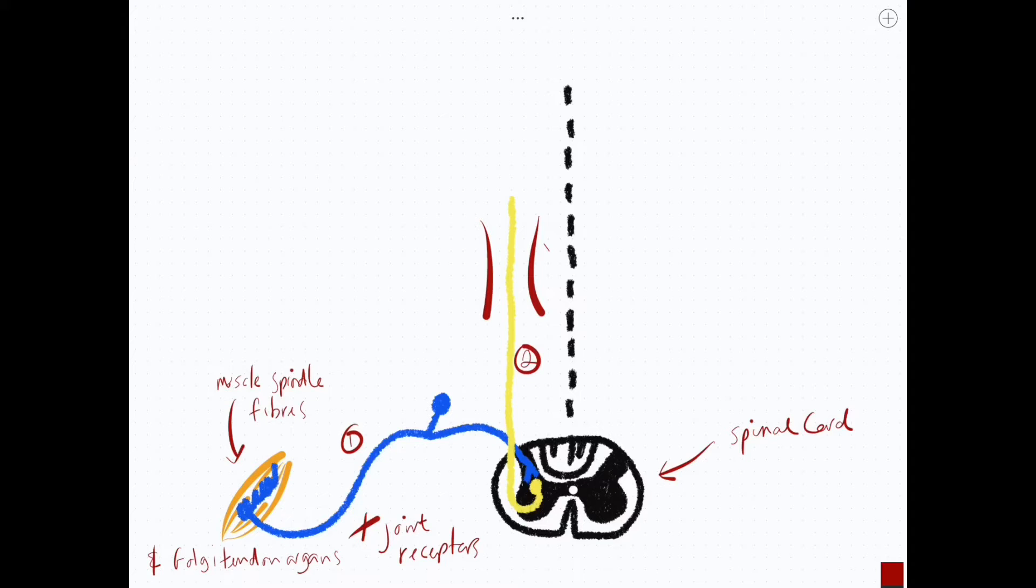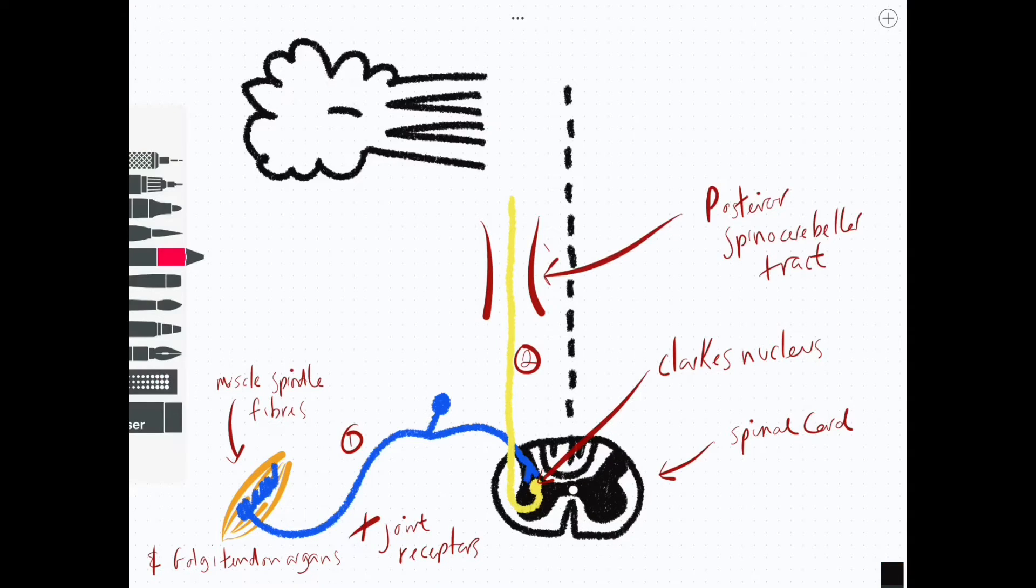That's going to take place at the Clarke's nucleus. Clarke's nucleus extends as a column throughout the spinal cord between the levels of C8 and L3. Should information come in between those levels, then everything's fine—it synapses at segmental level. Should it be below L3, then of course it has to ascend first to where the lowest Clarke's nucleus is in the column.